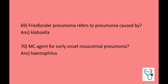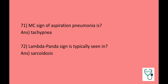Friedlander pneumonia refers to pneumonia caused by Klebsiella. Most common agent for early onset nosocomial pneumonia: Haemophilus. Most common sign of aspiration pneumonia: tachypnea. Lambda panda sign is typically seen in sarcoidosis.